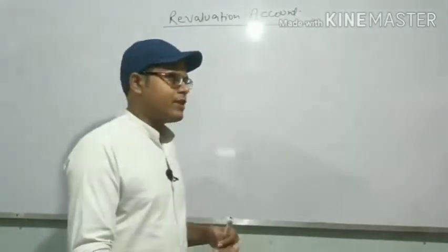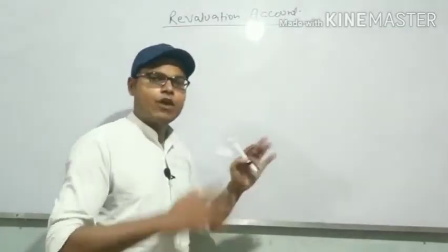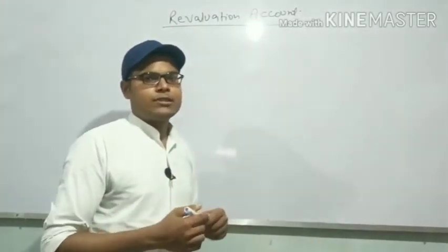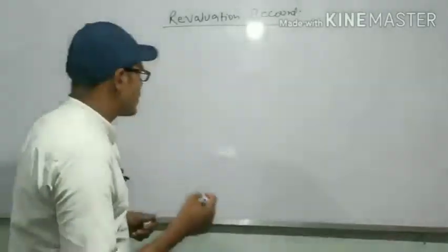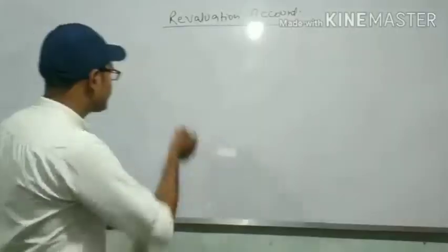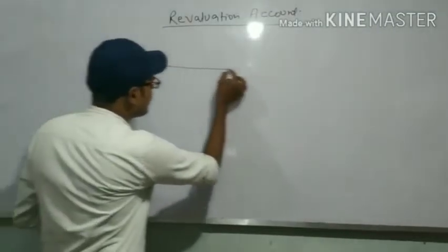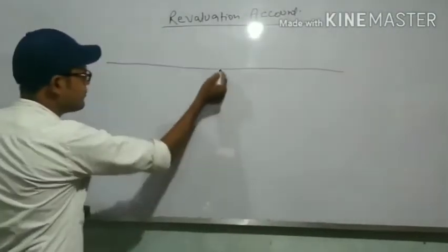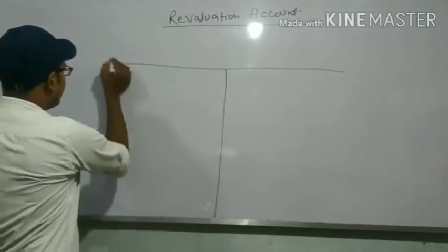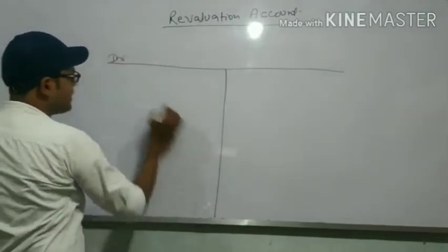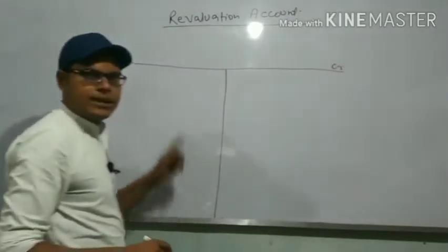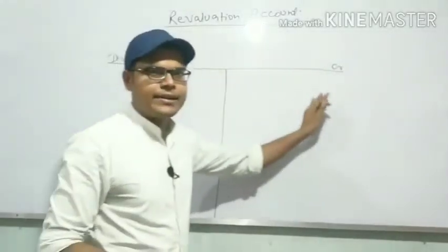First of all, we have to see the format. The format is a T-shape format — left side is debit and right side is credit.